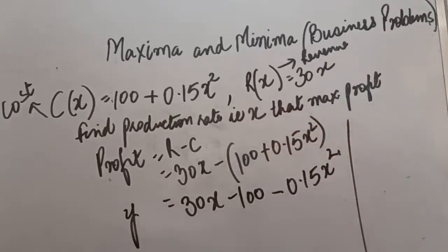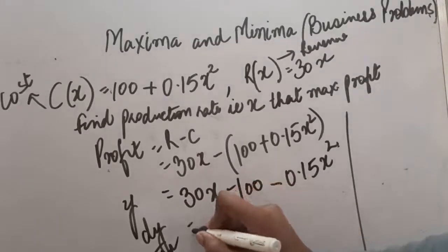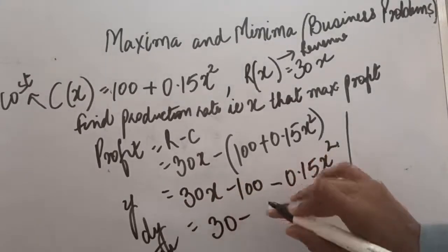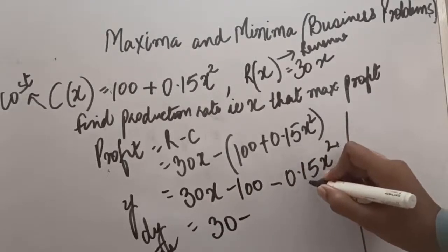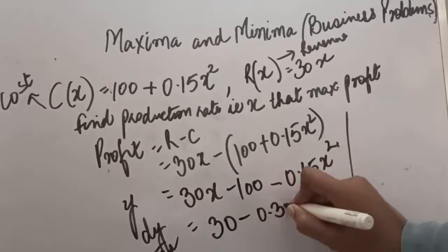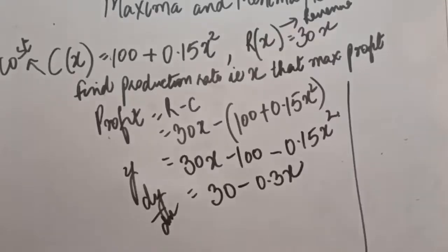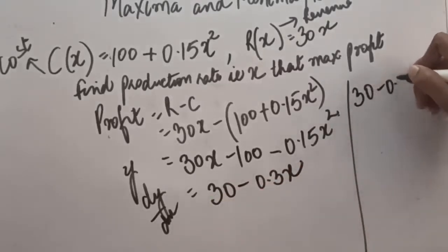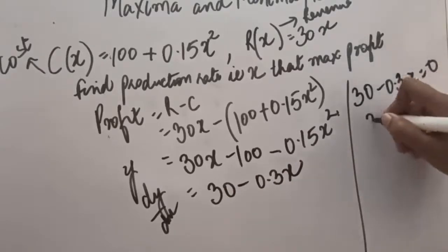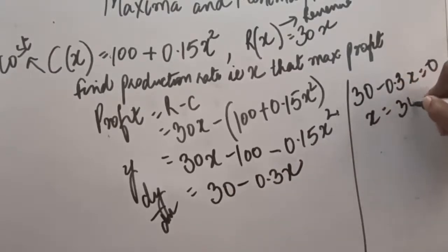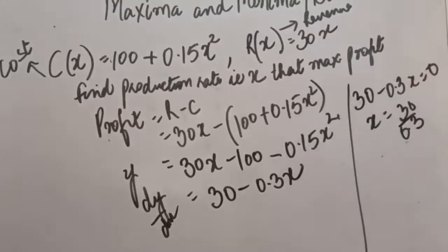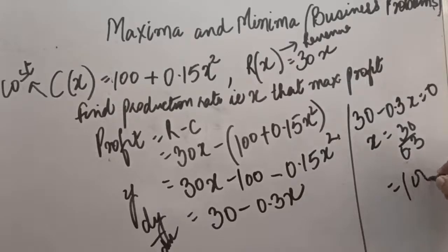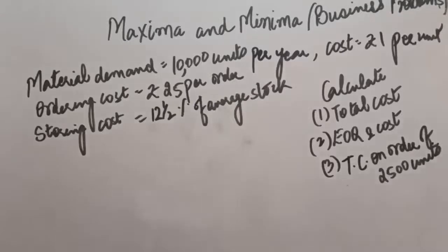According to the maxima minima principle, we take the derivative of y with respect to x. The derivative of 30x is 30, derivative of 100 is 0, and derivative of 0.15x squared is 0.3x. So dy/dx equals 30 minus 0.3x. Setting this equal to 0 gives x equals 30 divided by 0.3, which is 100. This is the production level that maximizes profit.